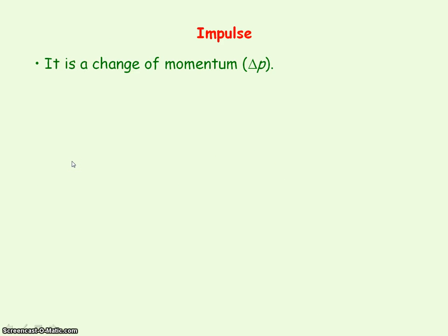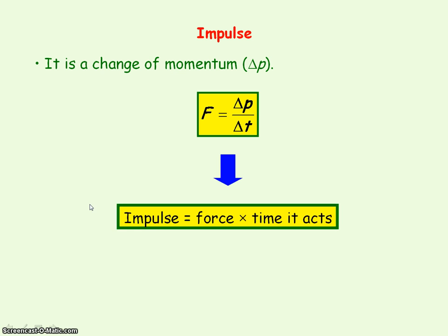The impulse of an object just means it's changing momentum. So it's given the symbol delta p. So if we go back to Newton's second law of motion where resultant force equals the rate of change momentum, so delta p is our impulse. So from this equation we can define impulse and we can say impulse equals our force multiplied by the time the force acts.